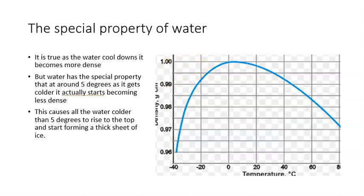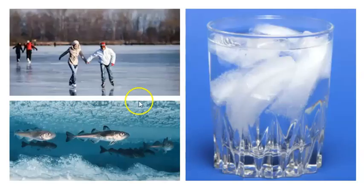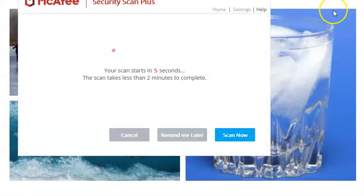Without this property we wouldn't be able to do a lot of things and see a lot of things in everyday life. Like we wouldn't be able to go ice skating on lakes. If water froze from the bottom, the lake would never get to the stage where it was cold enough for the whole lake to be frozen, so we wouldn't be able to ice skate on lakes.